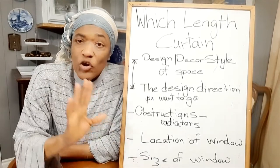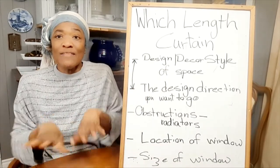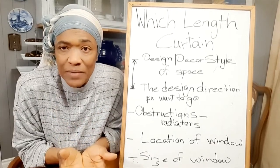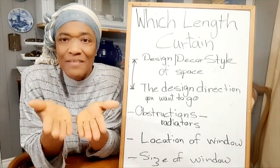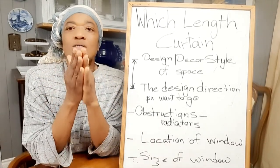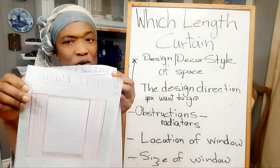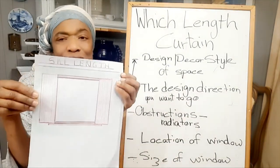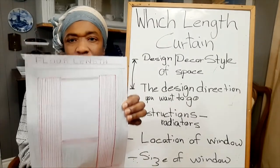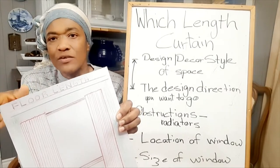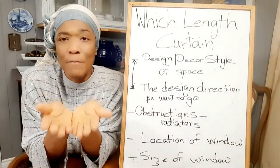Number one: your existing design style in the space. If you have a room where all you need to add is your window treatment, make sure whatever length you choose complements the existing space. So if you have a formal traditional living room, for example, you will not want to go with apron length or sill length curtain. You will want to go with your full length, or floor length, curtain — that's the one you'd want to choose for a more formal space.